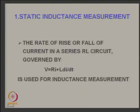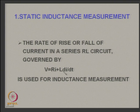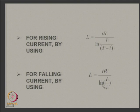Static inductance measurement calculates the rate of rise or fall of current in a series R-L circuit. Using V = Ri + L·di/dt, we get L = (V − Ri) / (di/dt). For rising current: L = R·t / ln(I / (I − i)); for falling current: L = t·R / ln(I / i). You can measure voltage and current waveforms and compute inductance from the response.